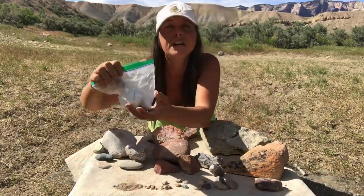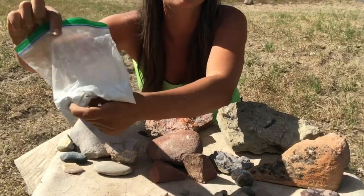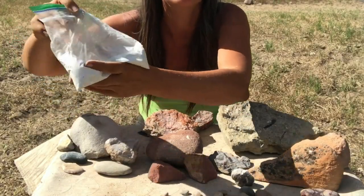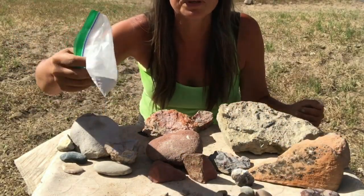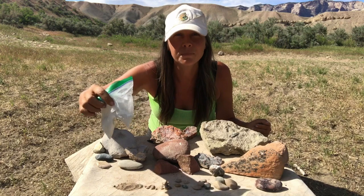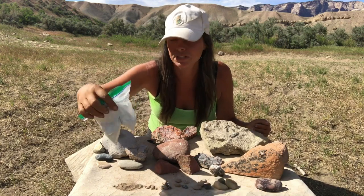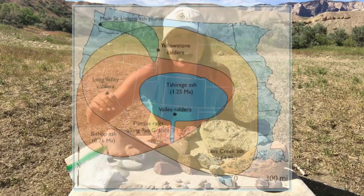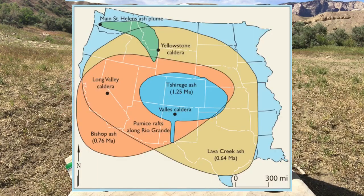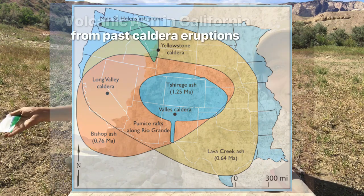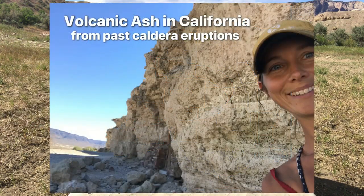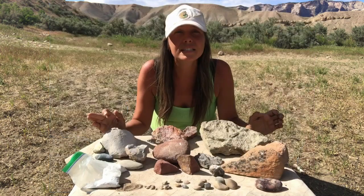Over here I have a bag of volcanic ash. Volcanic ash is also a very important component of many sedimentary rocks. In fact, when the volcanic hot spot of Yellowstone went off, it spewed ash all over the western and even into the Midwest portions of the United States.